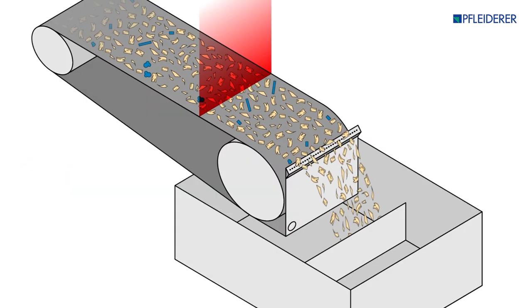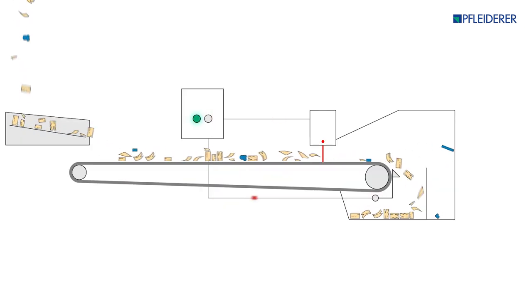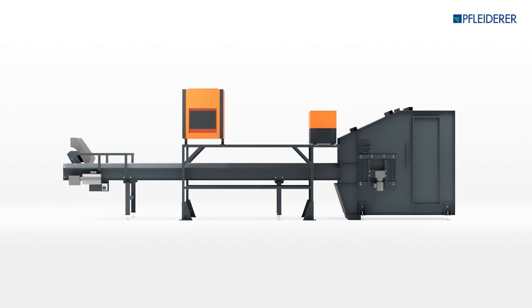When the system identifies a contaminant, it is separated from the material flow by a precise jet of air, similar to the method used on the X-ray sorting machine.